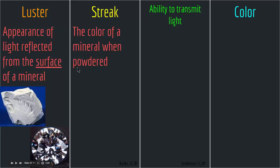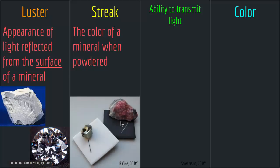Streak is the color of a mineral when powdered. For example, pyrite — the color of the mineral is yellow, but when you powder it on this powdering plate and rub it against it, the powder of pyrite will not look yellow but actually will look black. So streak is a good indicator and a good optical property that can tell us about minerals, and we can identify minerals with it.